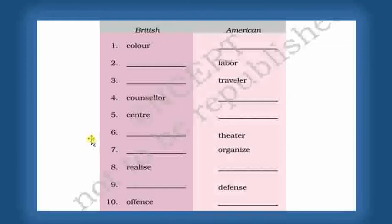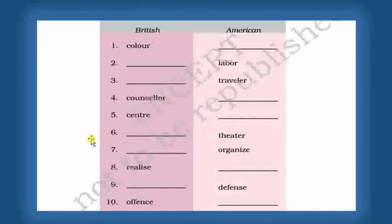Next: Labour. In American English it is L-A-B-O-R, but in British English you write it as L-A-B-O-U-R. Next is Traveller: in British English it is T-R-A-V-E-L-L-E-R.